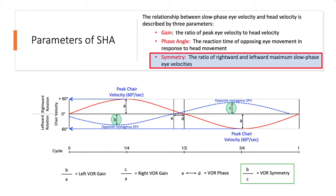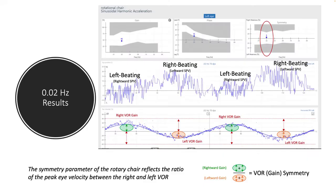Let's talk about symmetry — we're going to skip over phase now because it's a little bit more complicated. Symmetry is fairly simple. It's asking the question about the leftward VOR compared to the rightward VOR in response to chair rotation — essentially a comparison of how the right VOR compares to the left VOR.